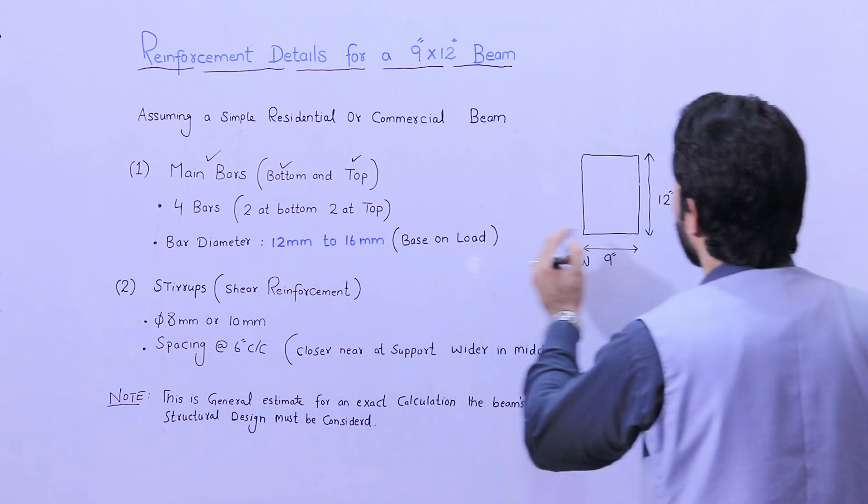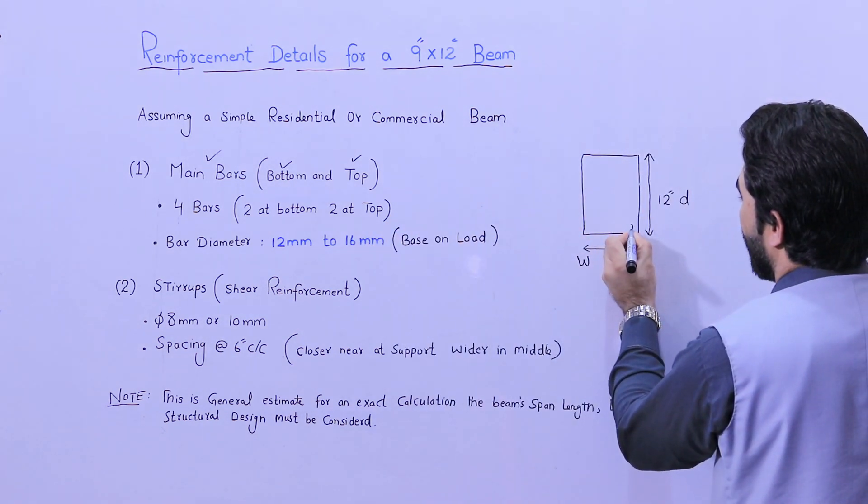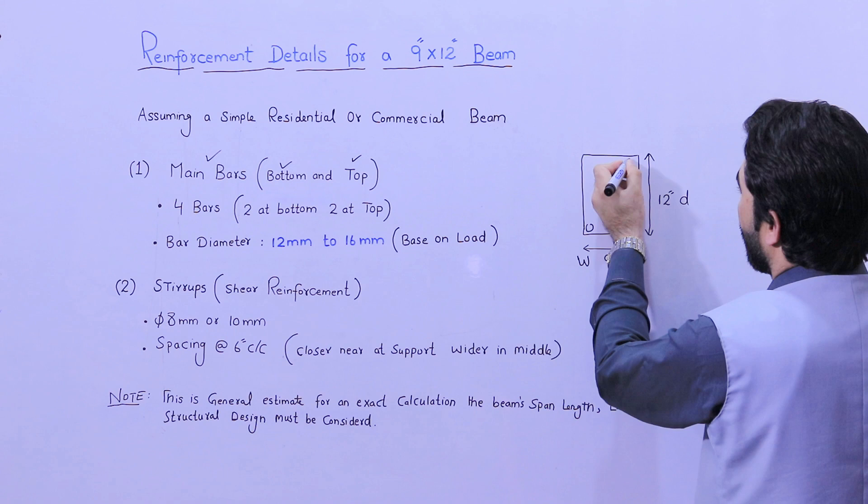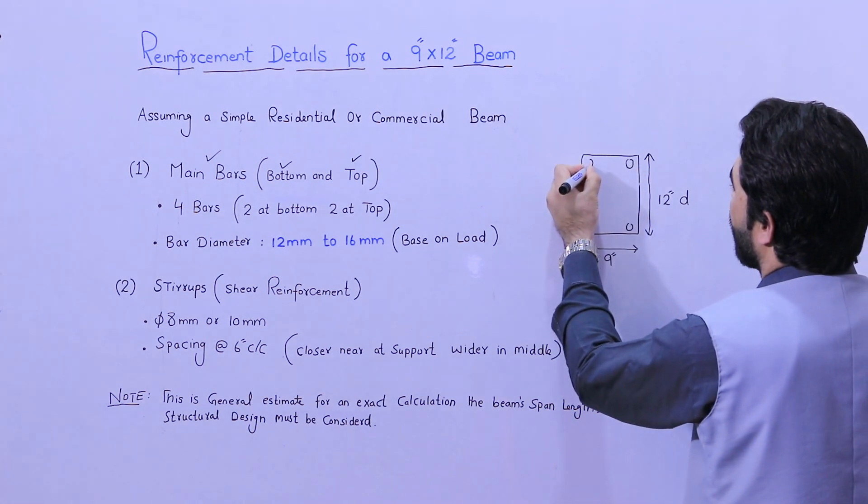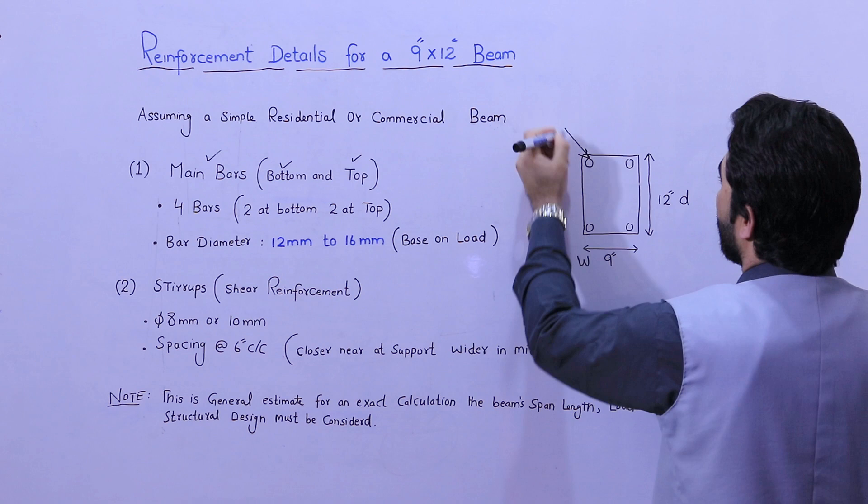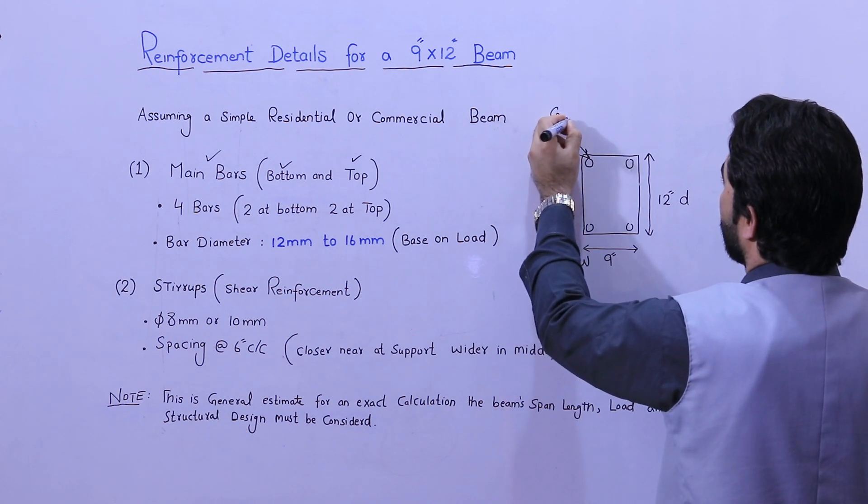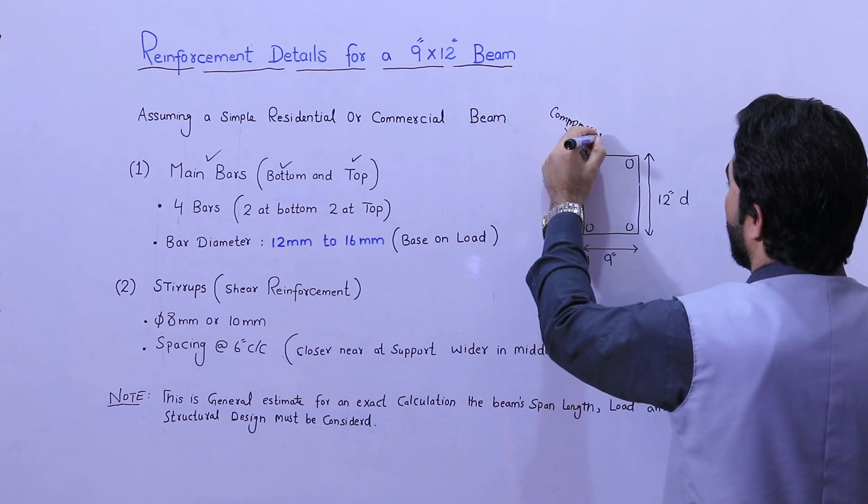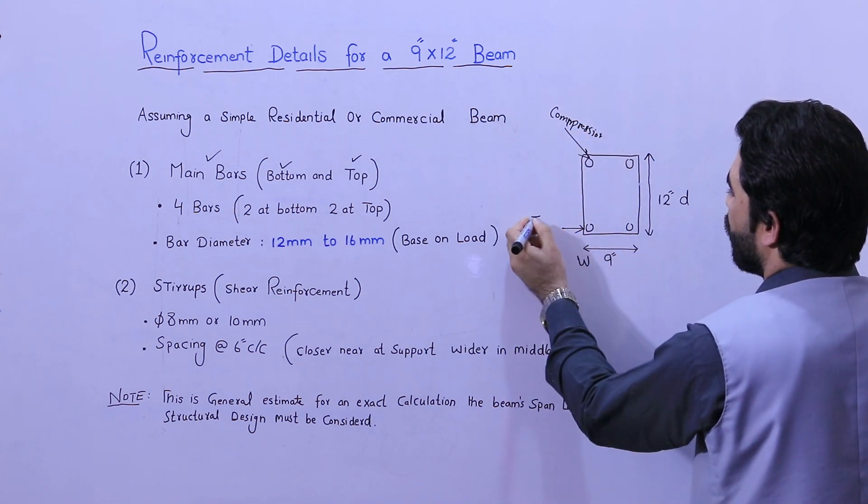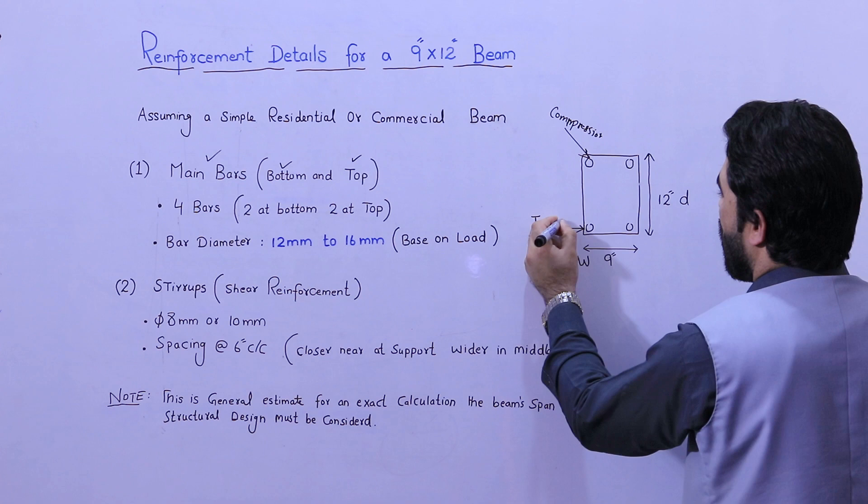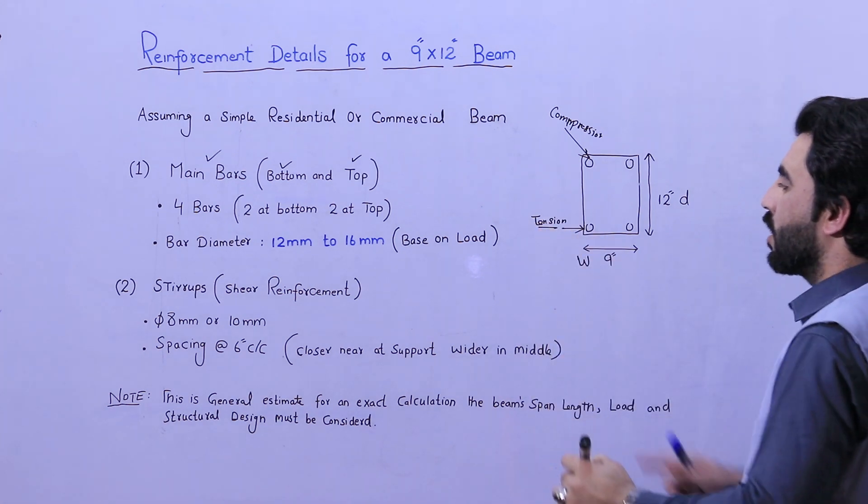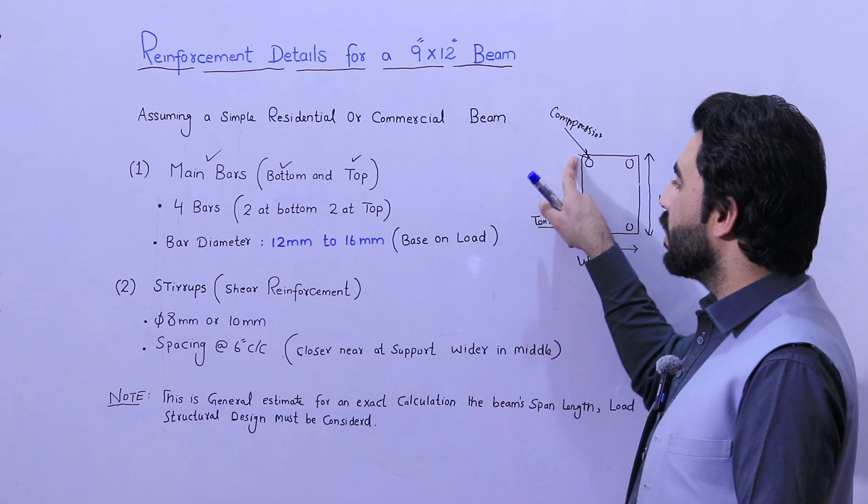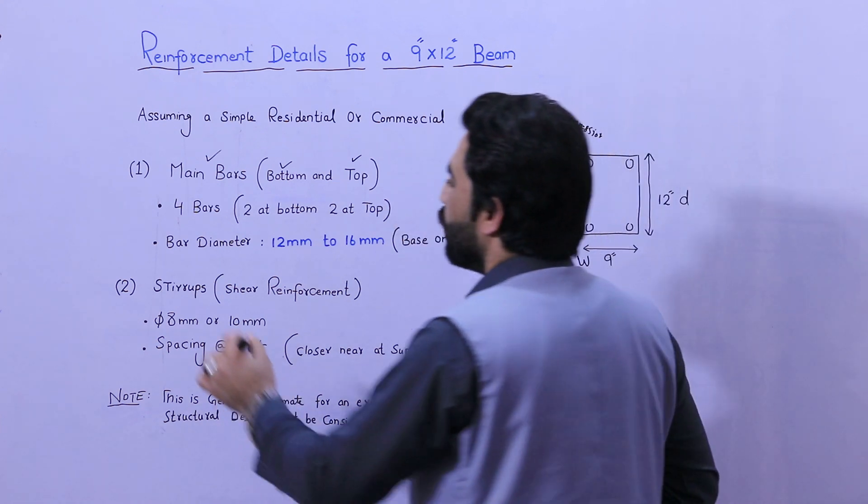Bottom and top bars means these are bottom bars and these are top bars. Top bars are called compression zone, this is compression bar. And this is tension zone. So bottom bars are called tension zone bars, and this is compression zone, the top one.